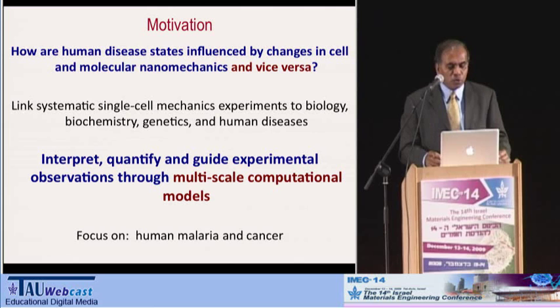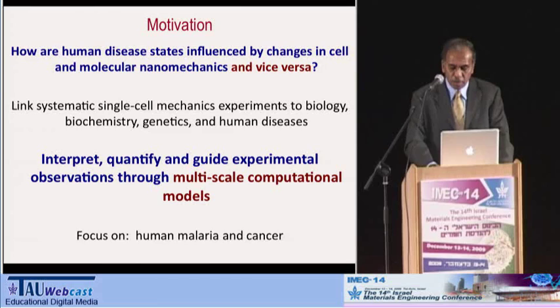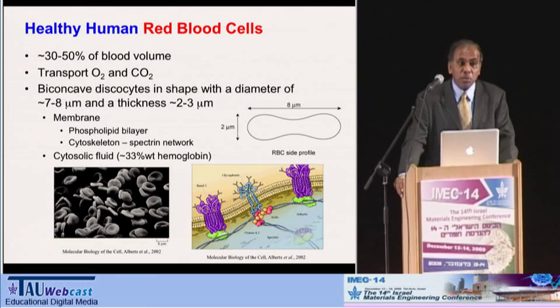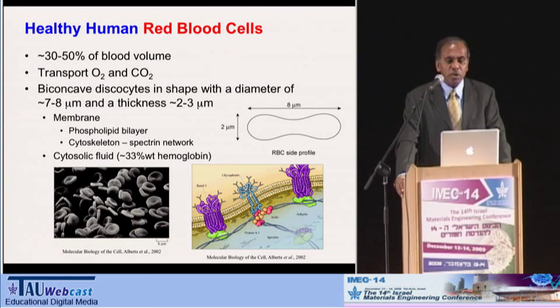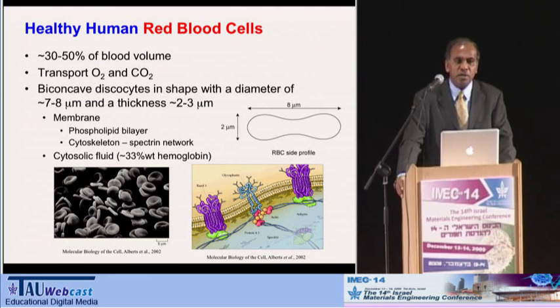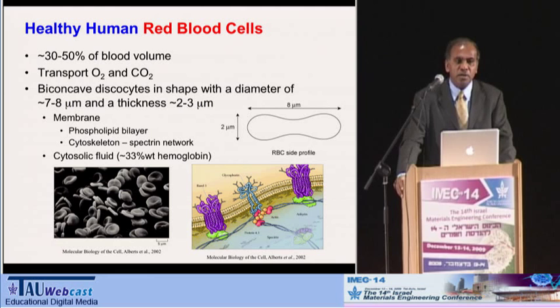For those who may not be familiar with human malaria: malaria is the most devastating infectious disease affecting humans. Every year, approximately 400 million people in the world contract some form of malaria, and according to the World Health Organization, somewhere between 2 million and 3 million people a year die from malaria. The carrier for malaria in the human body is the human red blood cell.